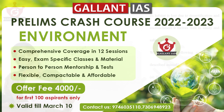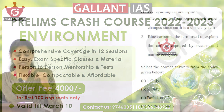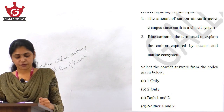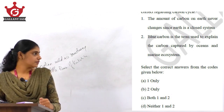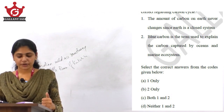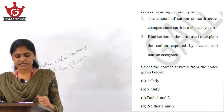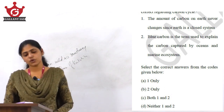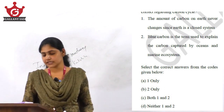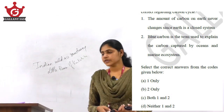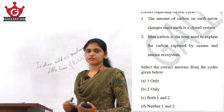Next is question number 23. Which of the following statements is or are correct regarding the carbon cycle? Statement one says the amount of carbon on earth never changes since earth is a closed system. Statement two says blue carbon is the term used to explain the carbon captured by oceans and marine ecosystems.